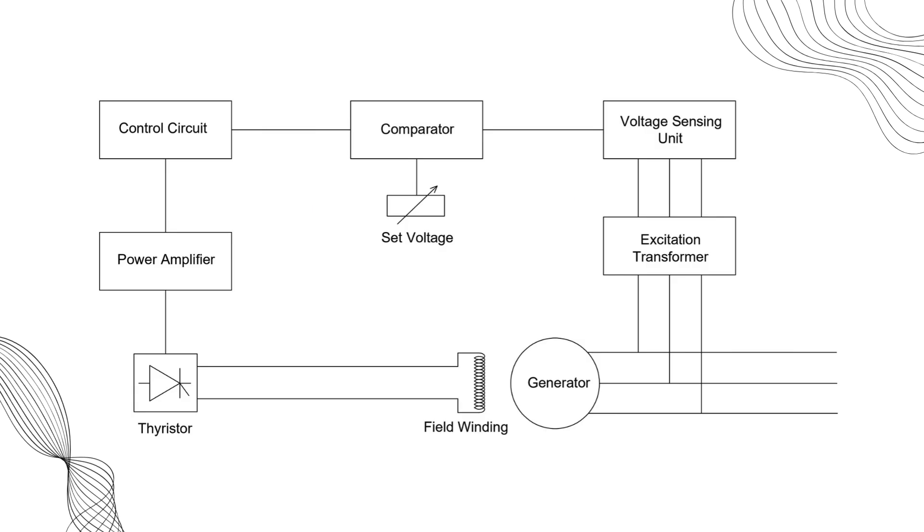There are other important components associated with the AVR, such as the voltage sensing unit, comparator, control circuit and amplifier. The voltage sensing unit detects the generator's output voltage and sends this information to the comparator. The comparator then compares this voltage with a reference value. If there's any difference, an error signal is generated and sent to the control circuit.